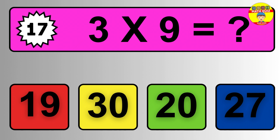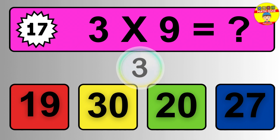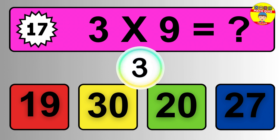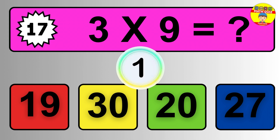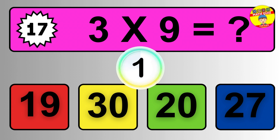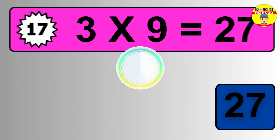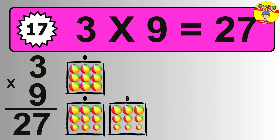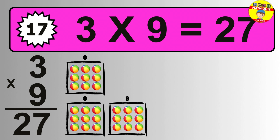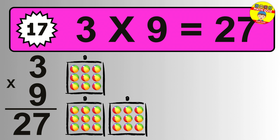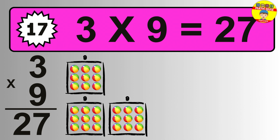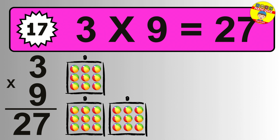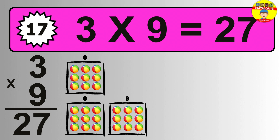Question seventeen: three times nine equals what? The answer is three times nine is twenty-seven. To calculate, we have three groups with nine balls each. So how many balls do we have? Twenty-seven balls.